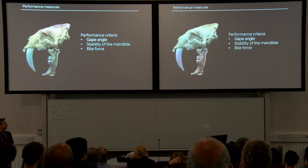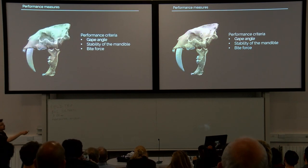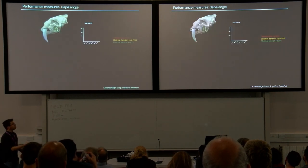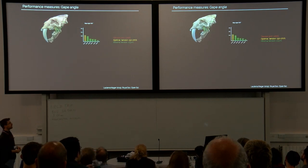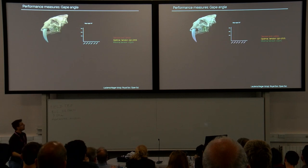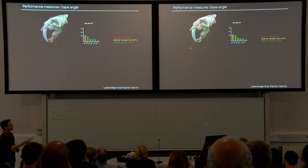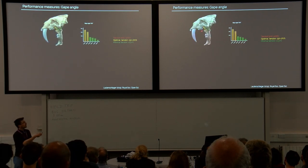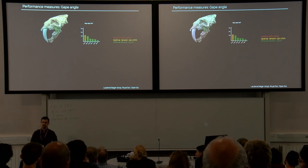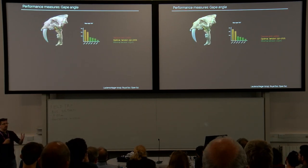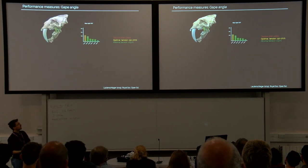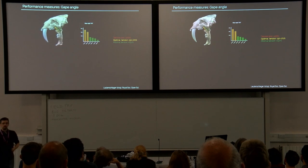Let's start with the gape angle. Obviously, if the canines grow larger, the lower jaw has to open wider to accommodate the clearance between the canines. Measuring maximum gape angle is based on a method I developed a couple of years ago, basically looking at muscle extension factors. Using a digital model — in this case Smilodon — the lower jaw is opened in a stepwise fashion, the jaw muscles are stretched, and the relationship between the resting length and the stretch length is calculated. As soon as that reaches a critical limit of about 170% of its resting length, the muscle turns red and the opening cycle stops, giving the overall maximum gape.